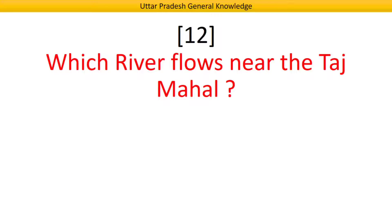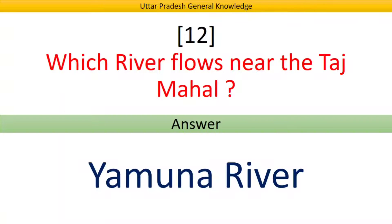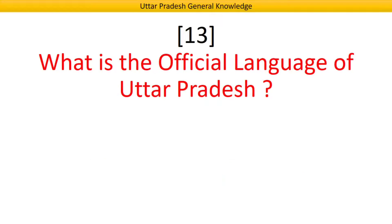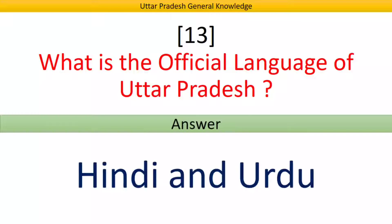Which river flows near the Taj Mahal? Answer: Yamuna River. What is the official language of Uttar Pradesh? Answer: Hindi and Urdu.